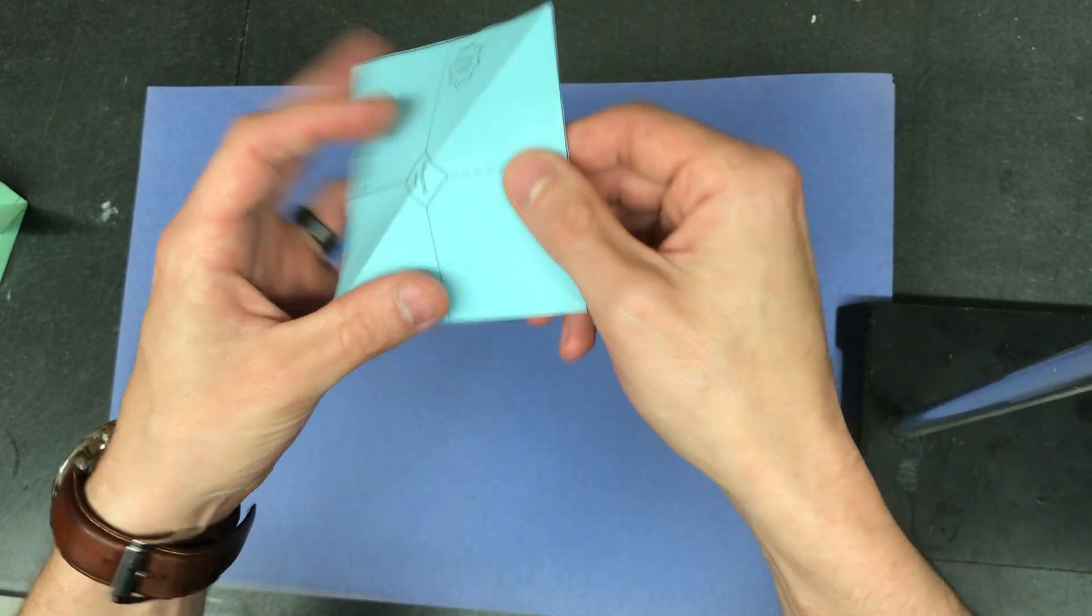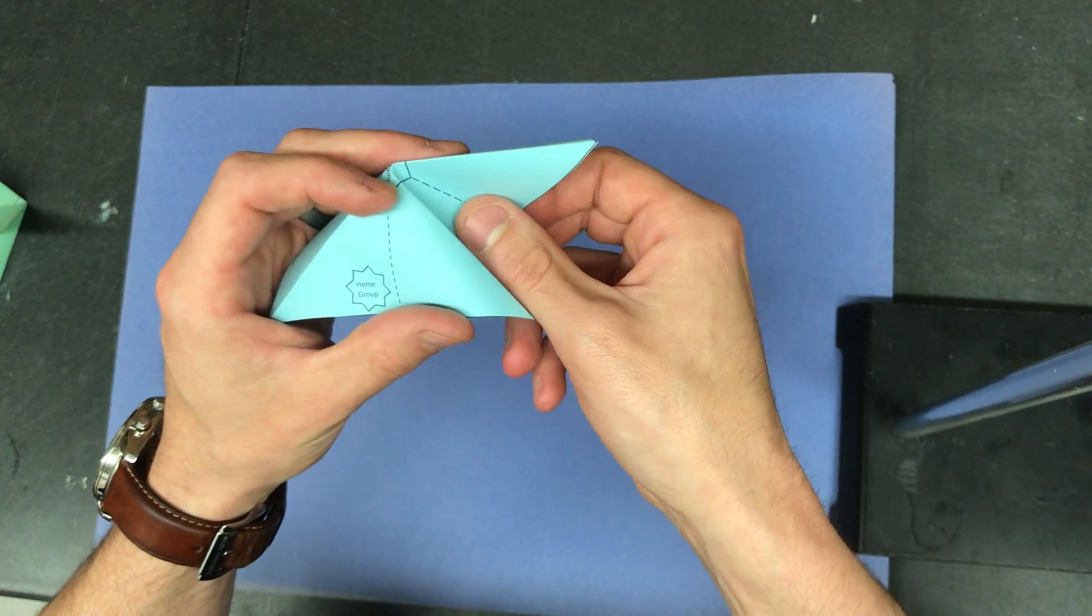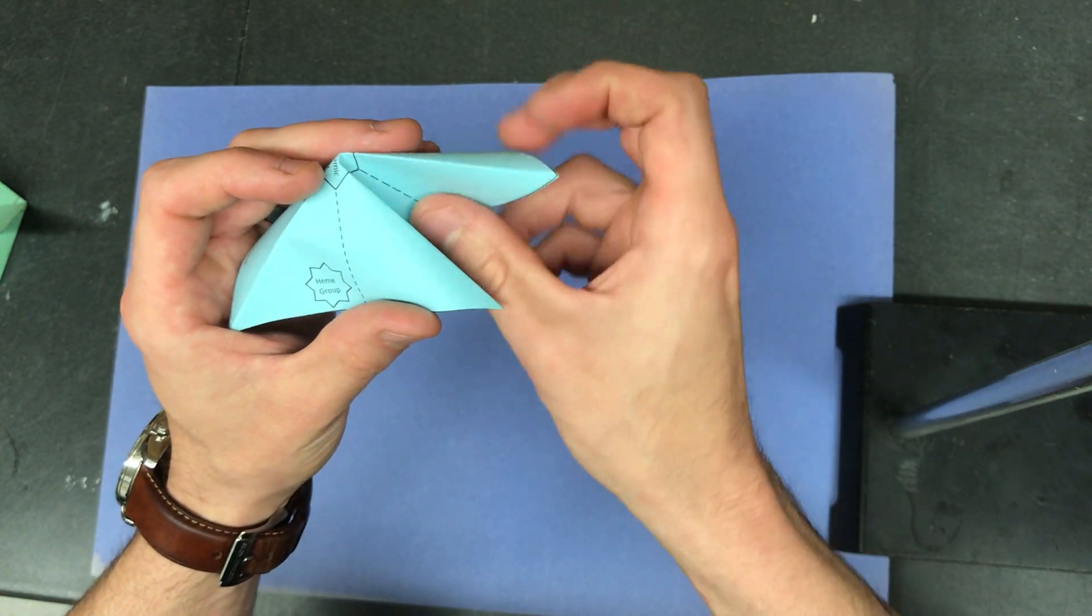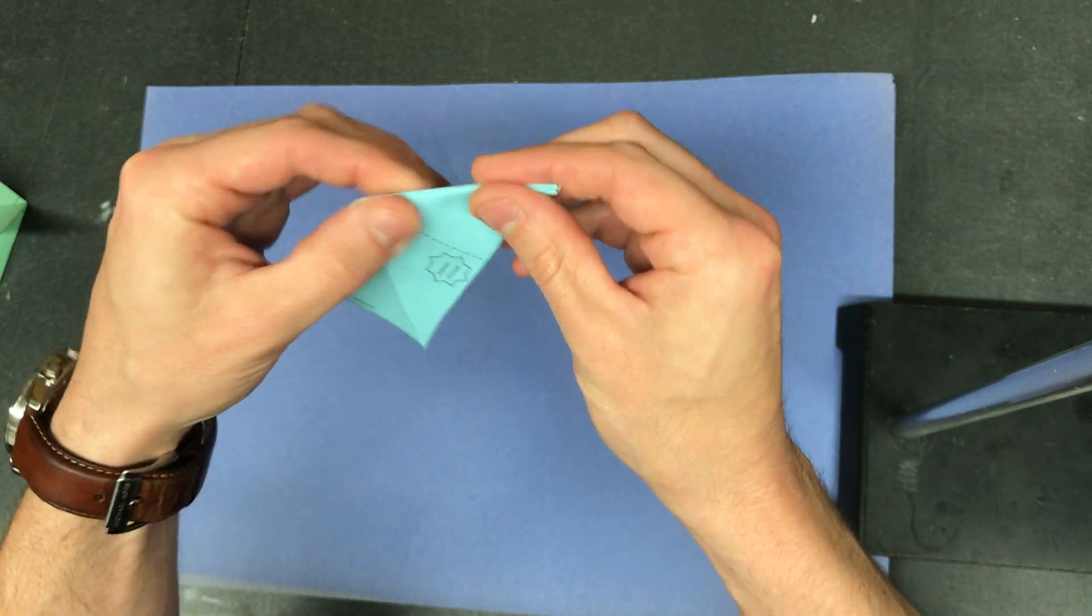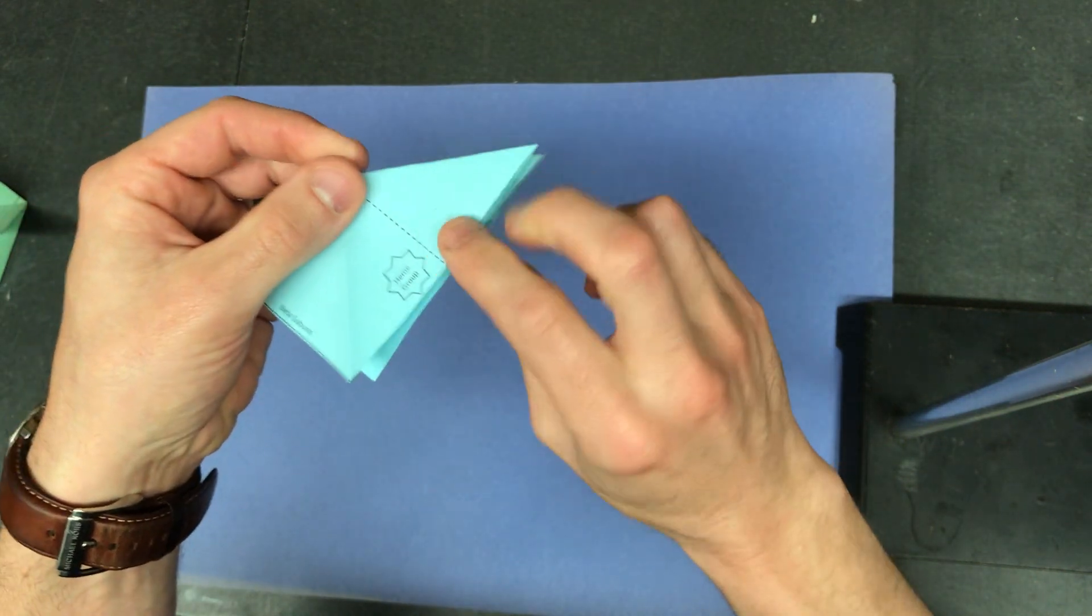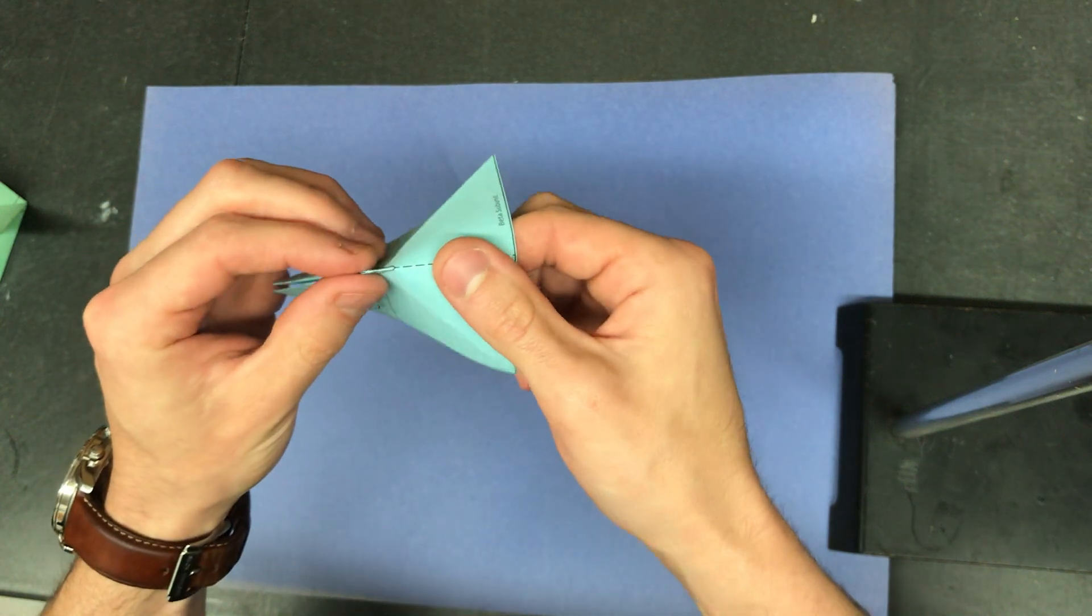You're going to fold inward along the dotted lines. So you're going to actually push the dotted line and line up those folds that you made with each other like this. You're going to do the same thing on the other side.